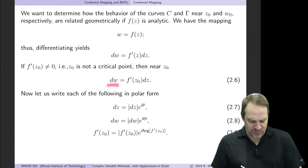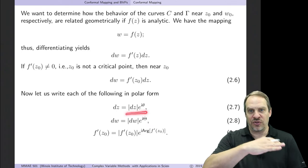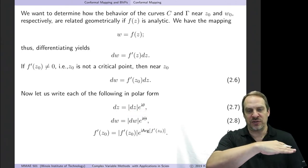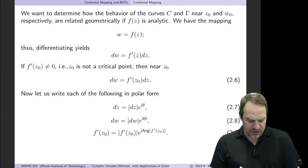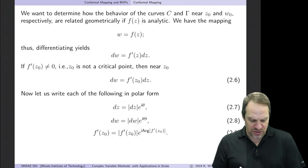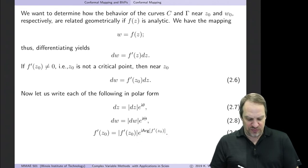Now let's take a look at the dw, the f prime of z₀, and dz. Let's write them in polar form. So dz, well, that's just the modulus of dz times e to the iθ. Again, θ being the angle from the positive real axis to the tangent of our curve C. Then dw, same idea, dw is the modulus of dw times e to the iΦ. And then f prime of z is the modulus of f prime of z at the point z₀ times e to the i times the argument of f prime of z₀.